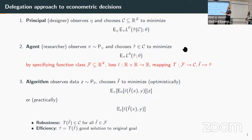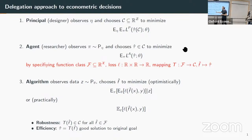We hope to find alignment between the principal and the researcher, and also alignment where the researcher uses a machine learning problem aligned with their goal. This alignment idea applies not just to a journal editor and a researcher, but also to implementing algorithms where we ask whether whatever goal we have when we design an estimator is aligned with what the underlying algorithm does in solving that prediction problem.